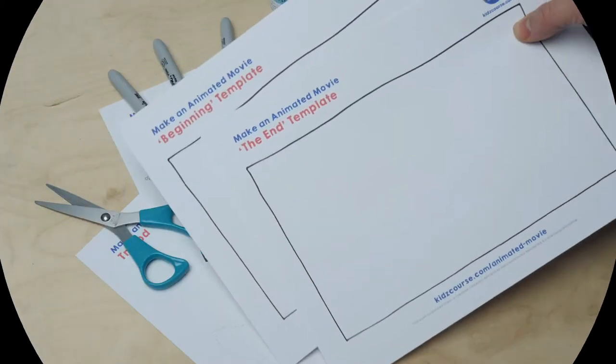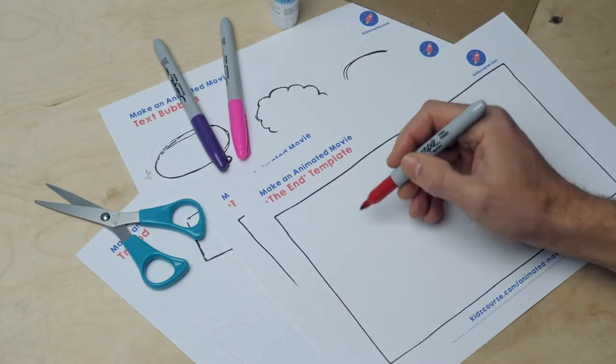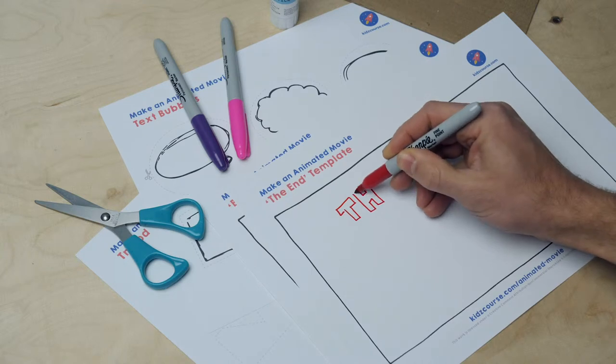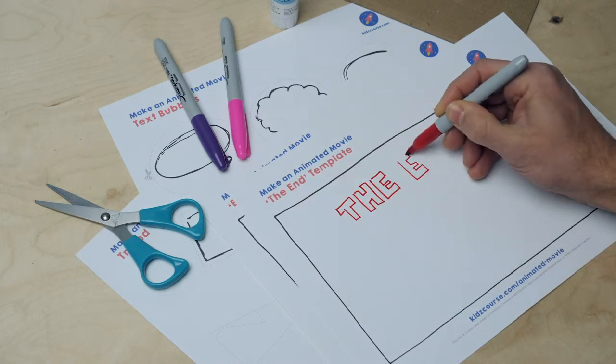Take the templates of the beginning and the end screen and create a beginning and end screen of your movie. Do you need more space? Of course you can always make more scenes or in between screens.